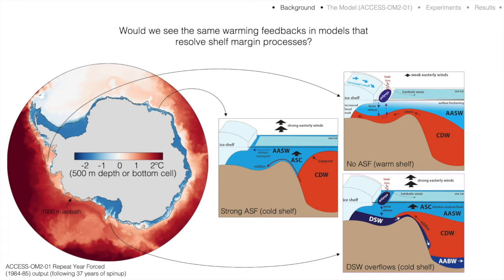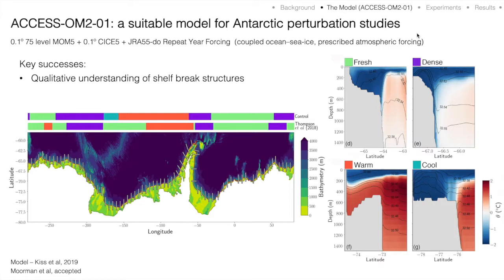A question that then arises is: if we did perturbation experiments where we increased the flow of fresh water off Antarctica with models that resolve some of these processes, would we still see the same warming feedbacks found in coarser coupled climate models? That's really the question we wanted to address with this study.